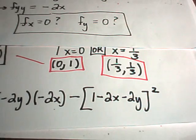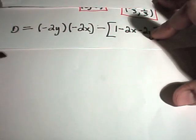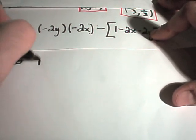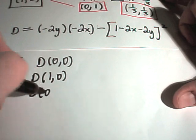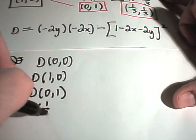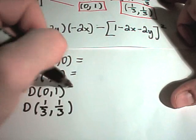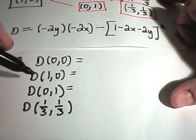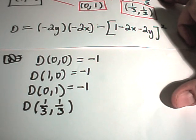What you have to do is take this D value and evaluate it at all of your critical points: (0, 0), (1, 0), (0, 1), and (1/3, 1/3). It actually turns out that if you check the first three, all of them give you negative 1. And remember, if the D value is negative, you automatically have a saddle point. So that part is easy enough.